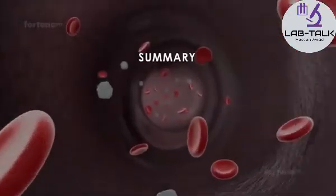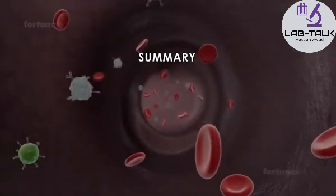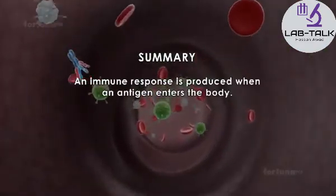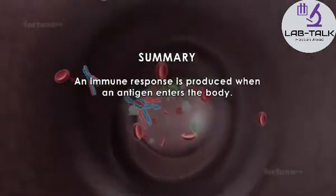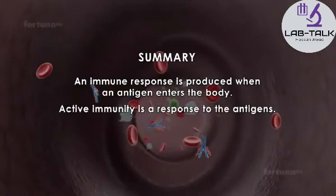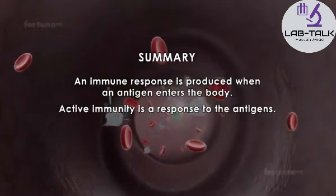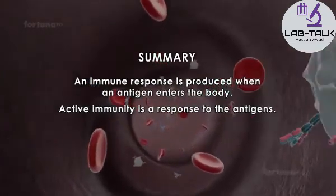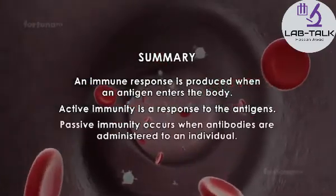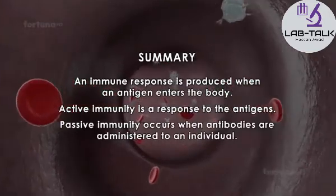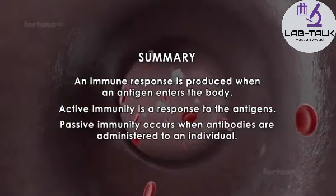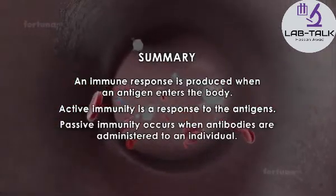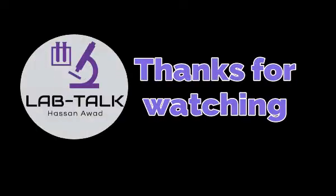Summary: An immune response is produced when an antigen enters the body. Active immunity is a response to antigens. Passive immunity occurs when antibodies are administered to an individual.